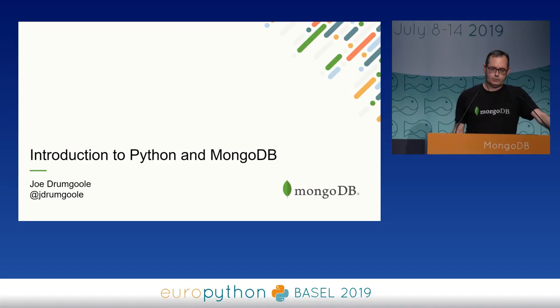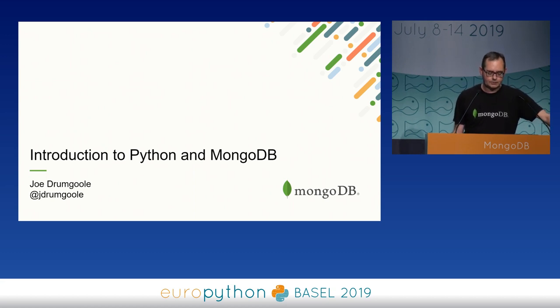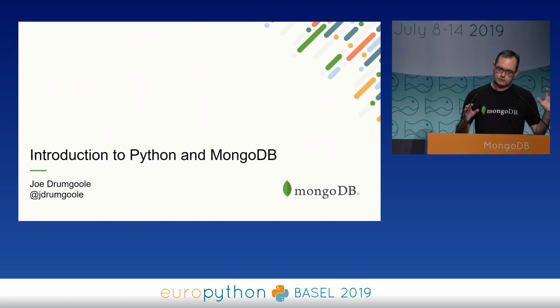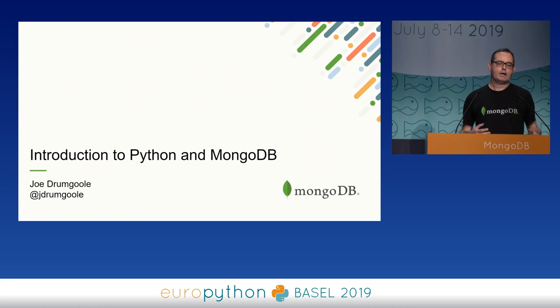Good afternoon, everybody. As Demeter said, my name is Joe Dramgul. I am Director of Developer Advocacy at MongoDB. What that means to most of you people in the room is that I can give you money for your meetup events. So if you follow me on Twitter at JDramgul, I'm happy to help fund meetup events across Europe, especially around Python. MongoDB doesn't have to feature, but we like to talk a little bit about it. We do talks like this all over Europe.